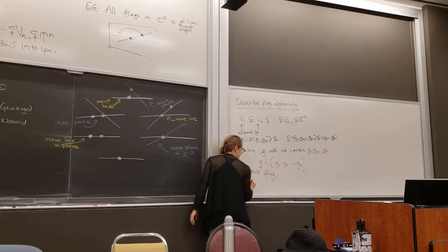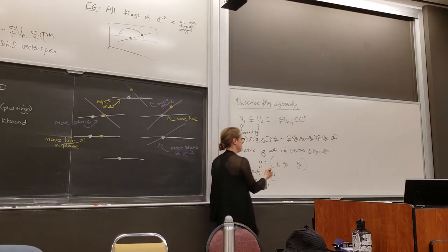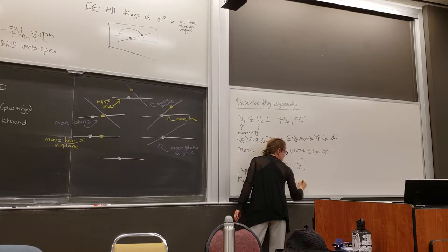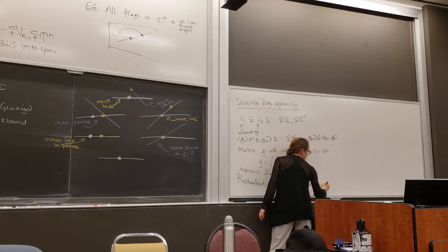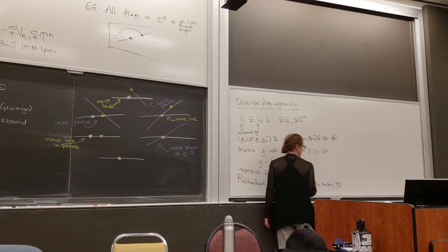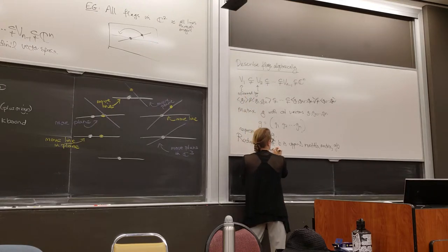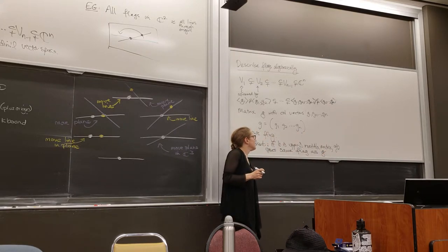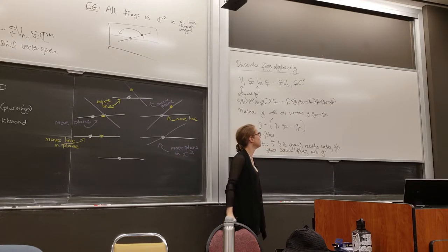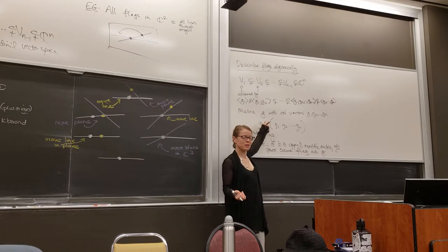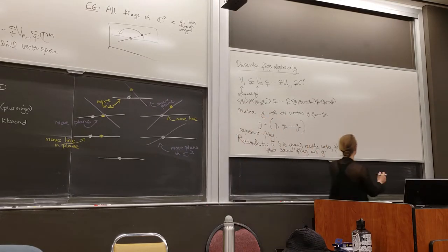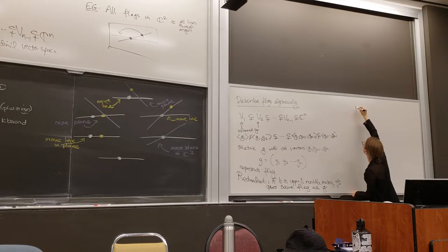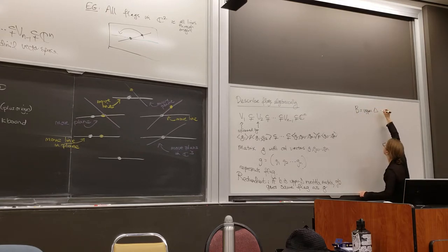What I'm saying is that if you take any upper triangular invertible matrix, g·B gives the same flag. This matrix also has to be invertible, because its columns span all of C^n. So the flag variety is this quotient of n×n invertible matrices by upper triangular invertible matrices.